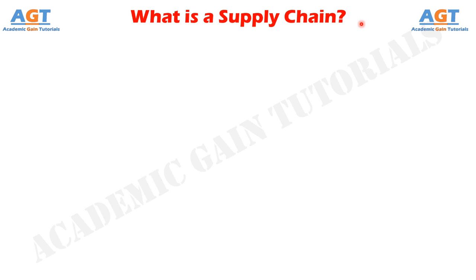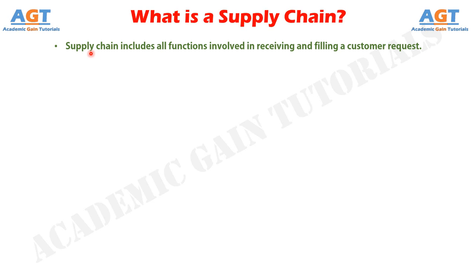Supply chain consists of all parties involved, directly or indirectly, in fulfilling a customer request. The supply chain includes not only the manufacturer and suppliers, but also transporters, warehouses, retailers, and even customers themselves. Within each organization, such as a manufacturer, the supply chain includes all functions involved in receiving and filling a customer request.